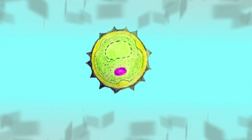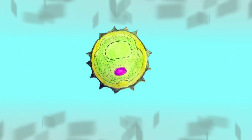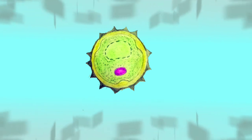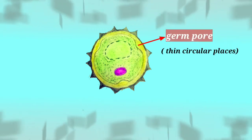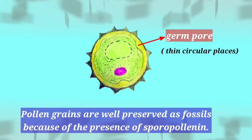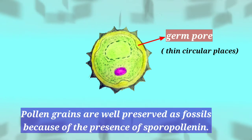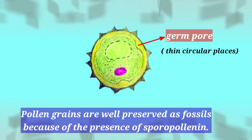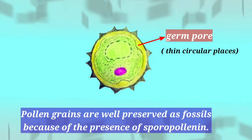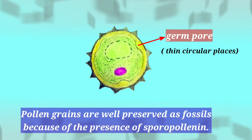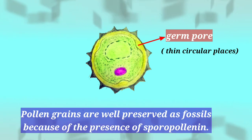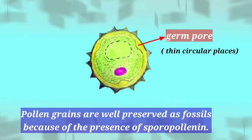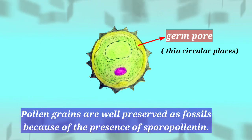Exine has prominent apertures called germ pores where sporopollenin is absent. Germ pores are circular places found on the exine wall. Pollen grains are well preserved as fossils because of the presence of sporopollenin. The exine exhibits a fascinating array of patterns and designs.